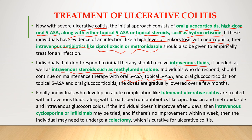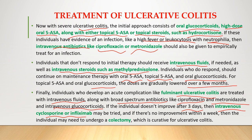If there is evidence of infection such as high fever or leukocytosis with neutrophilia, intravenous antibiotics like ciprofloxacin and/or metronidazole can be used. Individuals not responding to initial therapy should receive intravenous fluids and intravenous steroids such as methylprednisolone. For acute complications like fulminant ulcerative colitis, IV fluids, broad-spectrum antibiotics, and IV glucocorticoids are used. If no improvement after three days, intravenous cyclosporine or infliximab may be tried; if no improvement within a week, a colectomy may be needed. Infliximab is a monoclonal antibody; cyclosporine is an immunosuppressant.